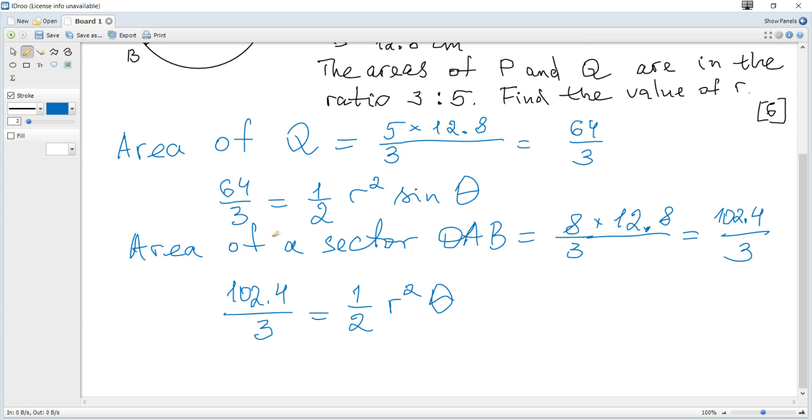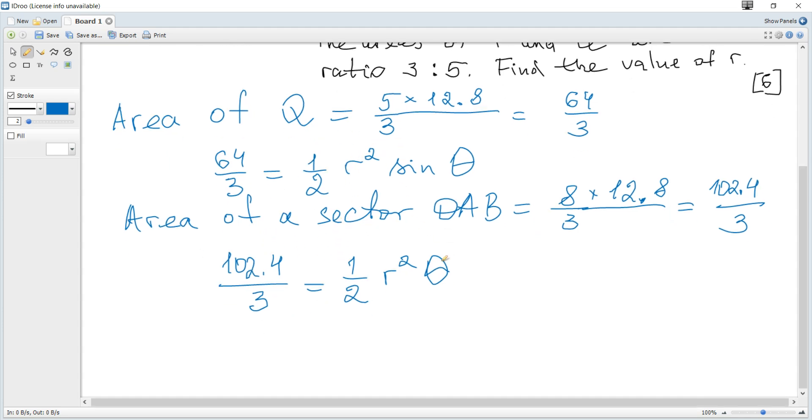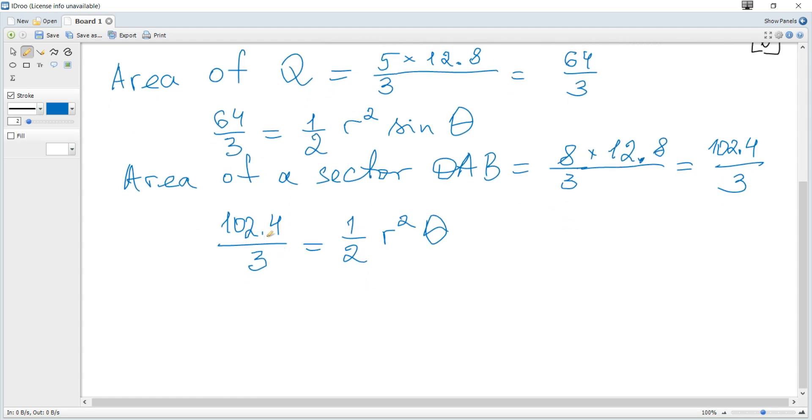We can divide both sides to get rid of R squared to get an equation in terms of theta only and find theta. So it becomes 64 over 102.4 is, half cancels, R squared cancels, sine theta over theta.